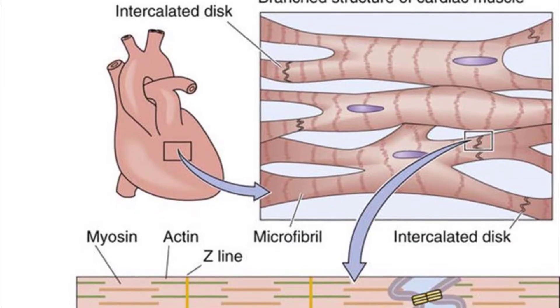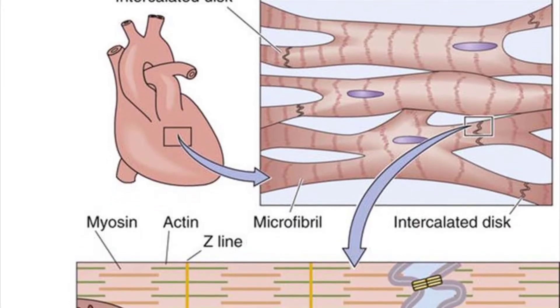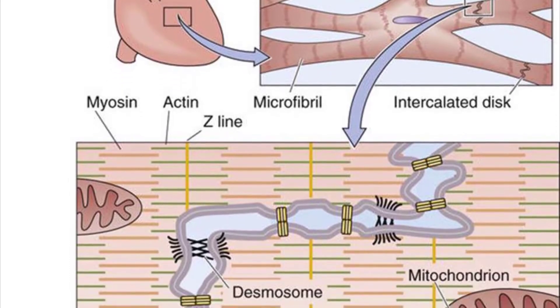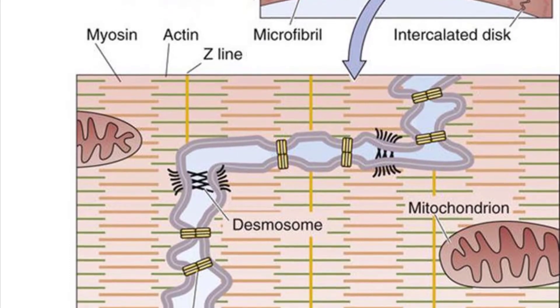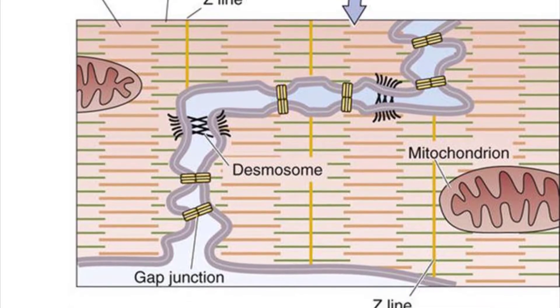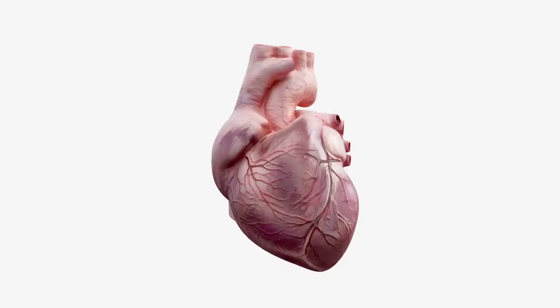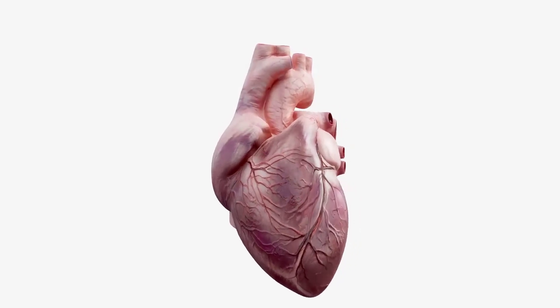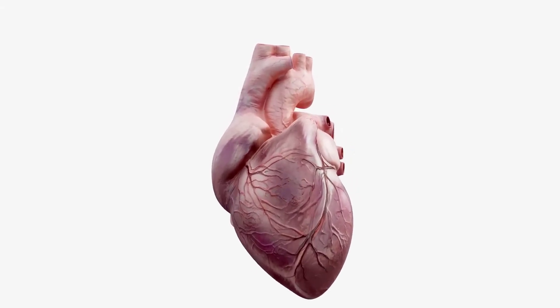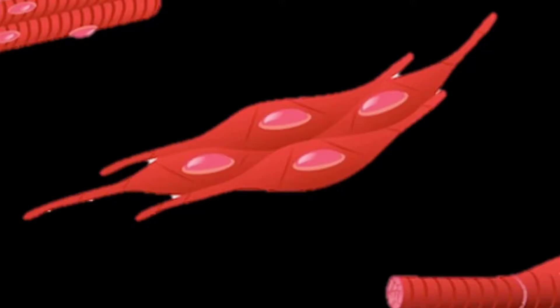Cardiomyocytes attach to one another with specialized cell junctions called intercalated discs. Intercalated discs have both anchoring junctions and gap junctions. These allow the cardiomyocytes to form long branching structures that synchronize their contractions, causing the heart to beat under involuntary control.